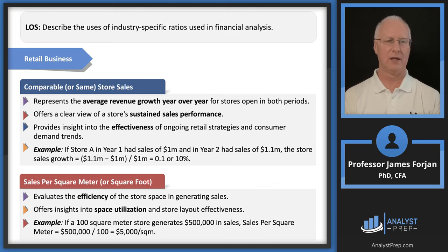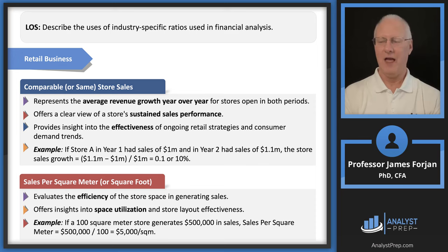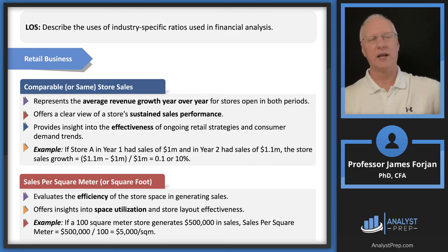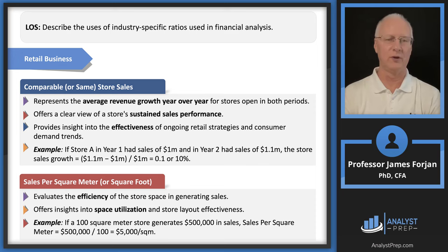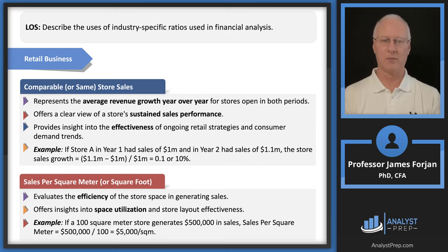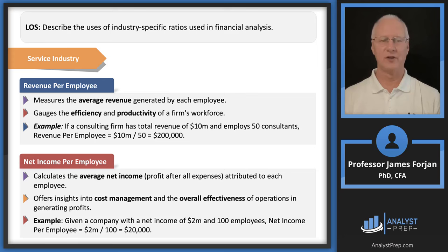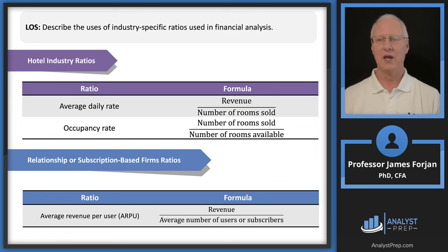For retail businesses like Walmart, relevant KPIs include comparable store sales over time — for example, there was one quarter where McDonald's sales finally declined after a long history of increases. Comparable store sales can be expressed as a ratio. You can also do sales per square foot. For service industries: revenue per employee, net income per employee. For the hotel industry: occupancy rate is super important.